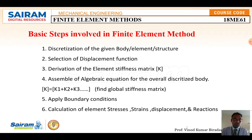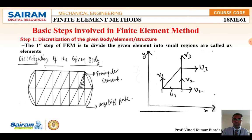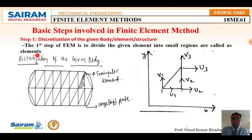Let me explain each step one by one. The element stiffness matrix is shortly called ESM and denoted by matrix K. Step 1 — discretization — means to divide the given element into small pieces, called elements. That is step number one.